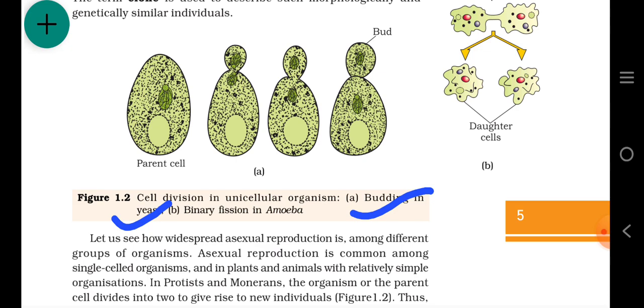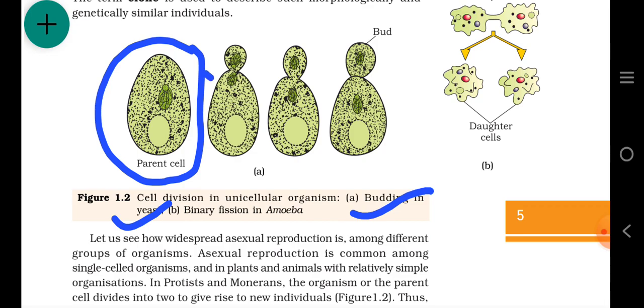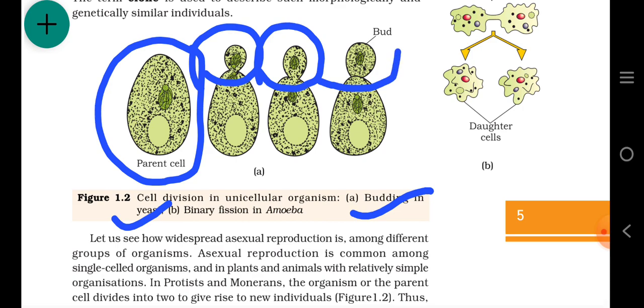Unicellular organism — made up of only a single cell. Budding in yeast and binary fission in Amoeba are both examples of asexual reproduction with single parent involvement. Now let's see part B — binary fission in Amoeba. This is the Amoeba cell.